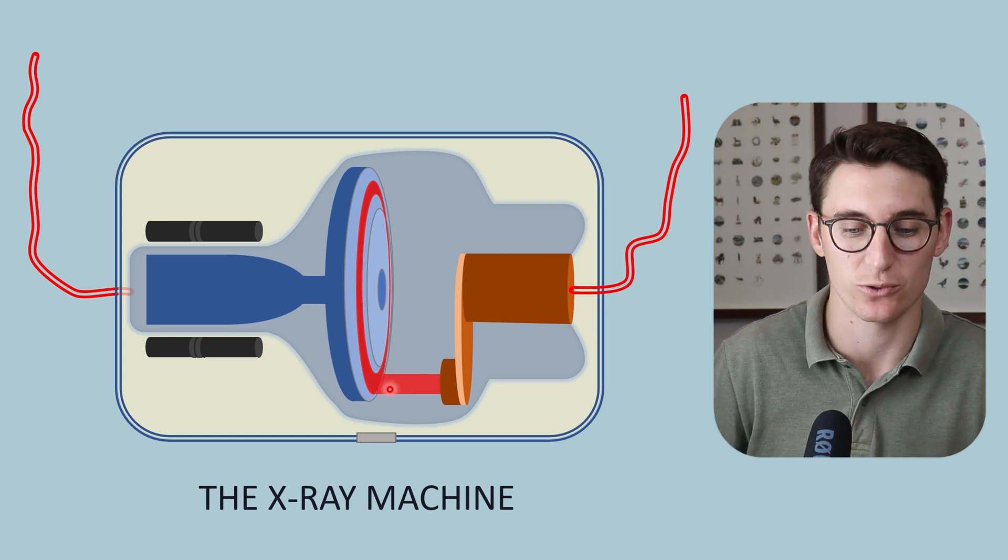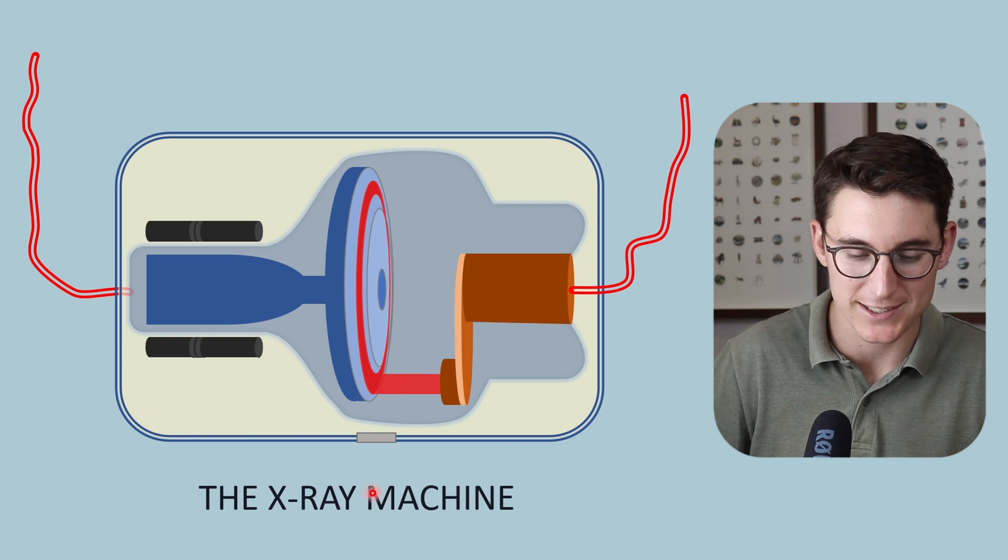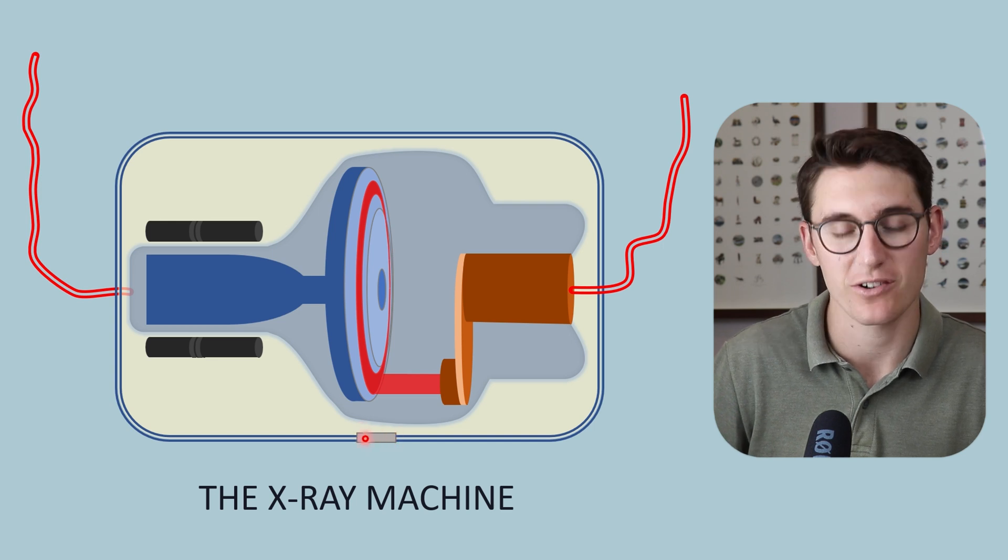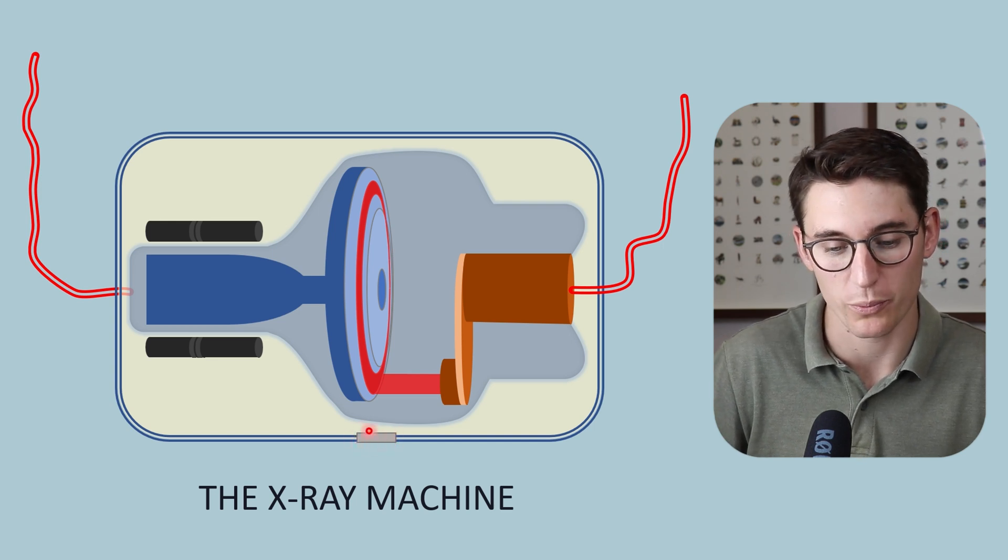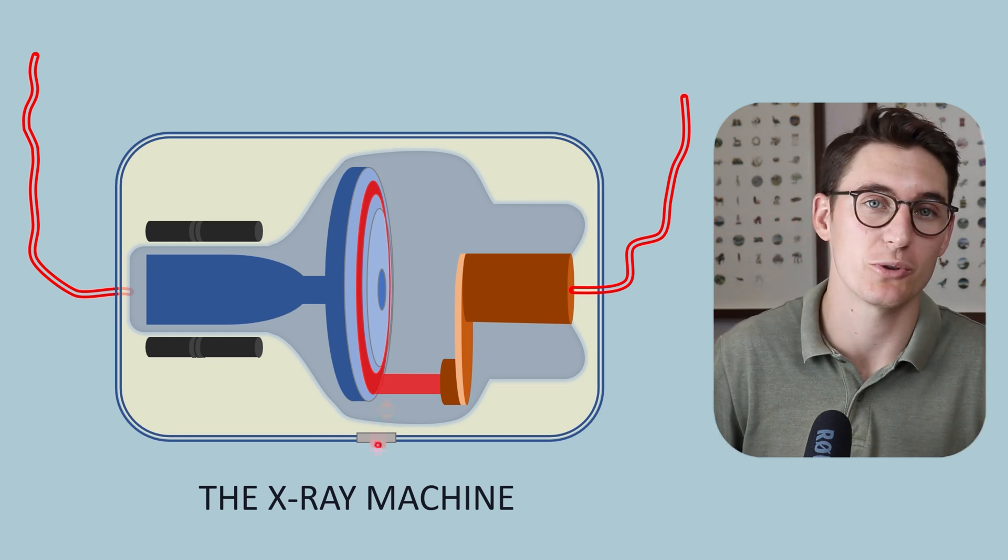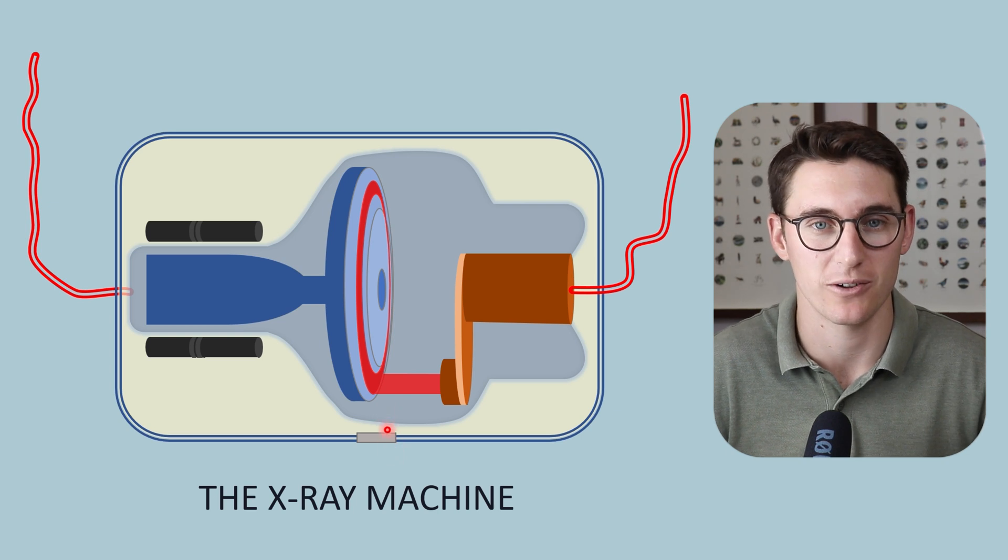Now x-rays are produced at this actual focal spot, and they will exit the x-ray tube through an x-ray window here. This x-ray window is generally made up of aluminium or beryllium, and it filters out some of the lower energy x-rays that are going to contribute to our patient dose, but not to our image.